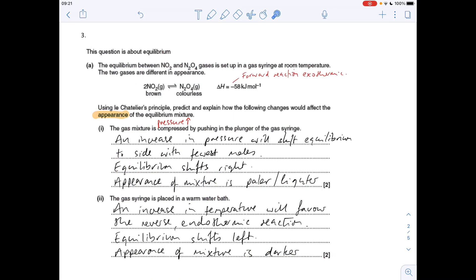Next question, we've got this equilibrium between NO2 and N2O4, and we're given the colours of the two sides. So this side is brown, this side is colourless. We've got to use Le Chatelier's principle to predict and explain how the appearance of the equilibrium mixture would change. The first part, the gas in the mixture is compressed, so that means the pressure's increased. An increase in pressure always favours the side with the fewest moles, so that means it's going to move to the right or forwards. So it will get lighter in colour or paler in colour.